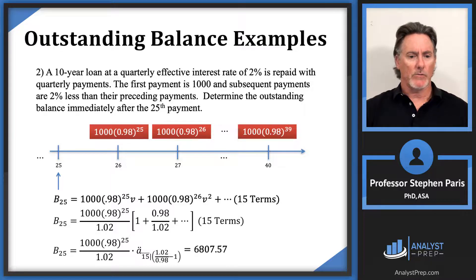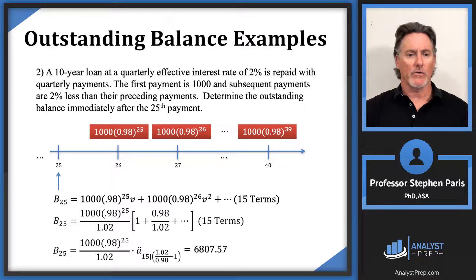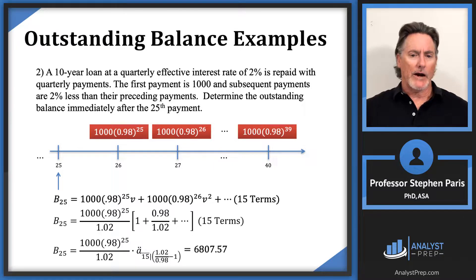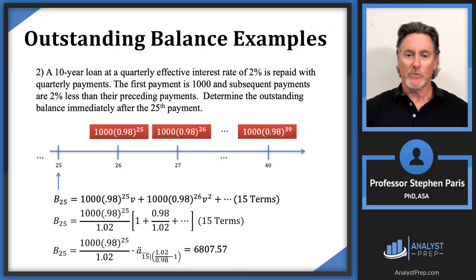That's the outstanding balance on this loan just after the 25th payment. These were a couple of good examples reminding you of arithmetic annuities and geometric annuities. We'll do more examples next.